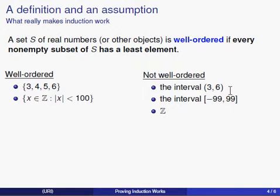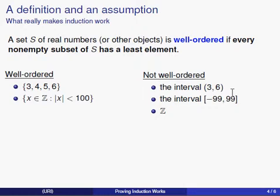Since this interval is a subset of itself and has no least element, the open interval from 3 to 6 is not well ordered. Similarly, the closed interval from negative 99 to 99, including the endpoints, is also not well ordered.